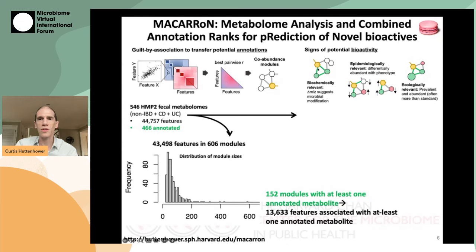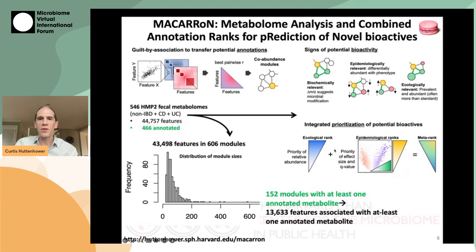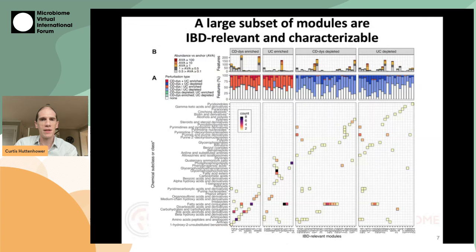We also look for epidemiological or phenotypic relevance — whether compounds are differentially abundant with respect to a phenotype — and ecological relevance, such as the prevalence, abundance, and distribution of chemicals across multiple microbial communities. These properties together give us an integrated prioritization of potential bioactives along with some initial guesses that help inform what some of the unannotated compounds might be.